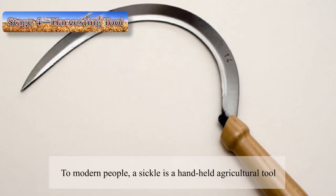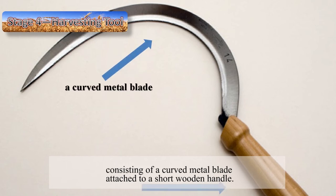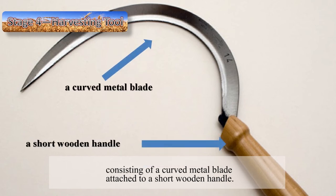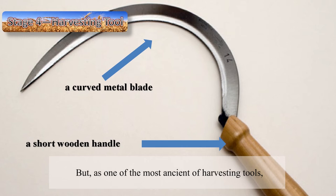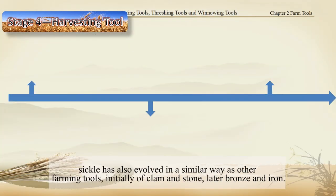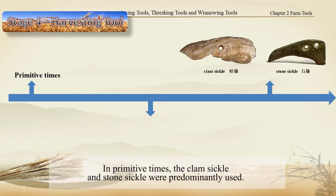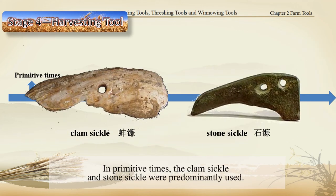To modern people, a sickle is a handheld agricultural tool consisting of a curved metal blade attached to a short wooden handle. But as one of the most ancient harvesting tools, the sickle has also evolved in a similar way as other farming tools — initially of clam and stone, later bronze and iron. In primitive times, the clam sickle and the stone sickle were predominantly used.